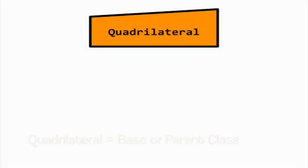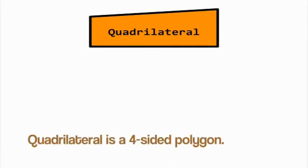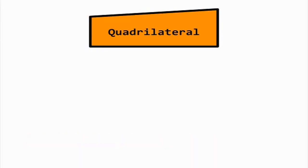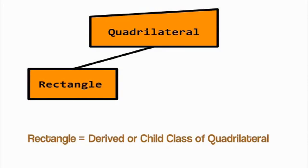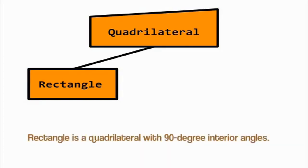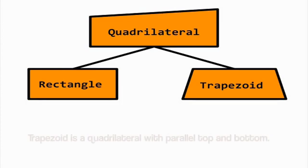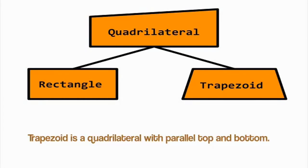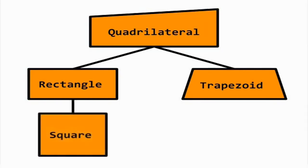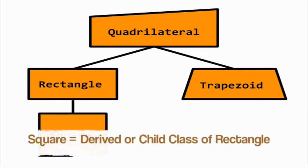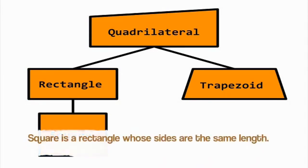Suppose we have a class named quadrilateral — the template from which we build four-sided polygon objects. To demonstrate inheritance, let's give the quadrilateral class a child called rectangle. Rectangle objects have all the attributes of quadrilateral with one additional property: the interior angles must each be 90 degrees. Let's make another child class called trapezoid, which inherits the traits of quadrilateral plus the trait of having a parallel top and bottom. For fun, let's create a class called square — it inherits all the attributes of rectangle and gains the requirement of having all side lengths be the same.